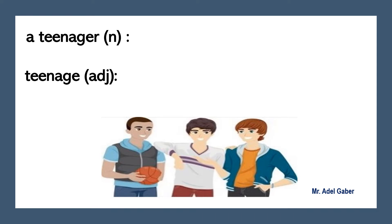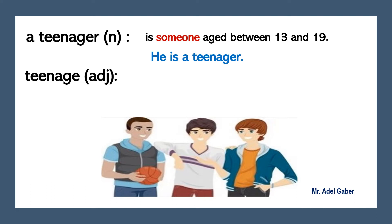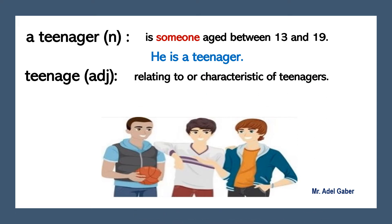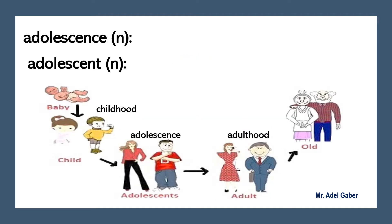Can you read these two words: 'a teenager' and 'teenage'? What is the difference between those two words? The first word is a noun — it means someone aged between 13 and 19. Example: 'He is a teenager.' 'Teenage' is an adjective — it means relating to or characteristic of teenagers. Example: 'He is a teenage boy.'